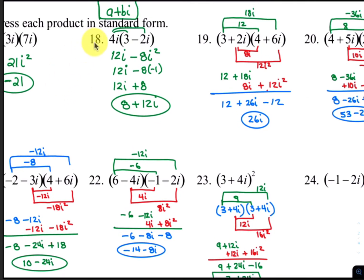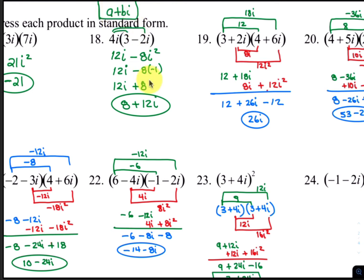For number 18, distribute 4i times 3, which makes 12i, and 4i times negative 2i is negative 8i squared. The negative 8i squared becomes positive 8, because i squared is negative 1. Then rewrite that as 8 plus 12i, because standard form is a plus bi — the real part comes first and the imaginary part last. So it's 8 plus 12i.